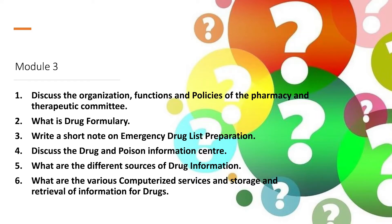Here you need the primary information sources as well as the secondary information sources. What are the various computerized services and storage and retrieval of information for the drugs? Here you can discuss the different databases for getting information on the drugs.